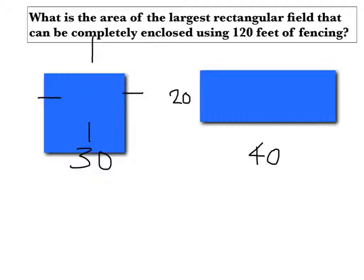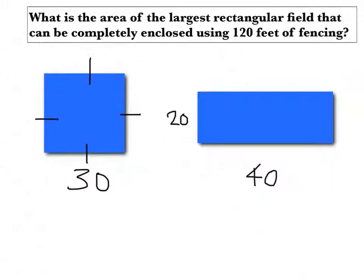Here, because it's 120 feet of fencing, the square has four sides, so each side would have 30 feet of fencing. Whereas this rectangle has 20 feet on its width and 40 feet on its length, which has a total of 120 feet of fencing.